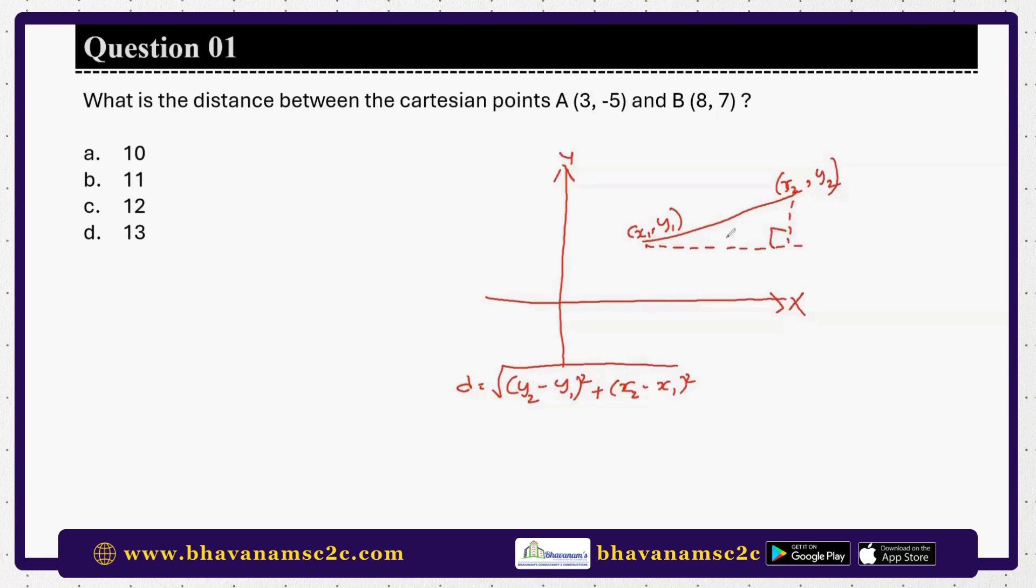Let us suppose this is a right angle triangle. This distance will be the difference between two x coordinates, and this distance you can represent as y2 minus y1. What is the Pythagorean theorem? The hypotenuse is the square root of sum of the squares of the other two sides. Here d is the distance between those two points, where d is the hypotenuse. The base is x2 minus x1 and the height is y2 minus y1. That is how you got this formula.